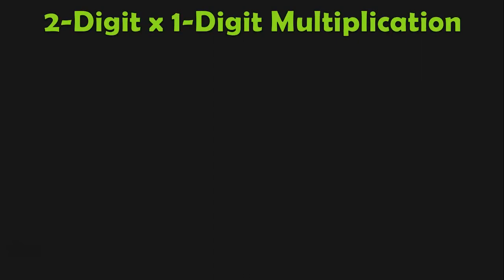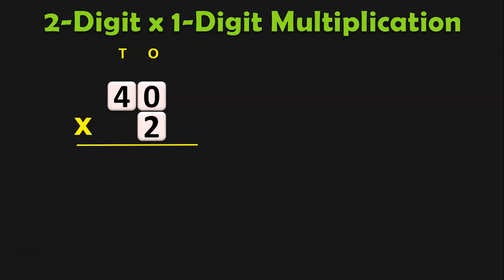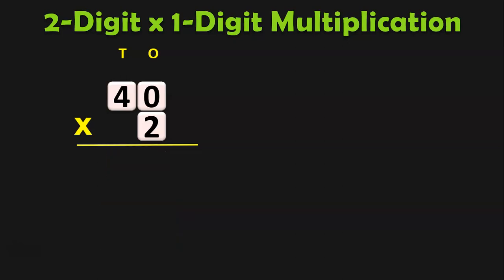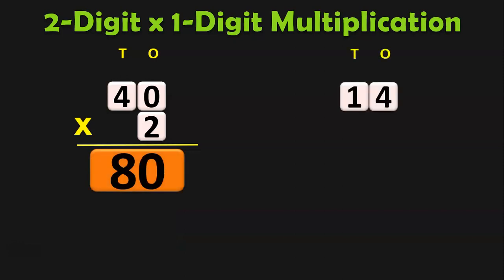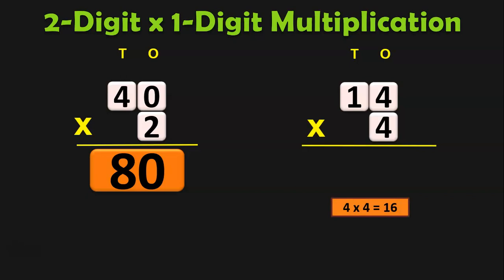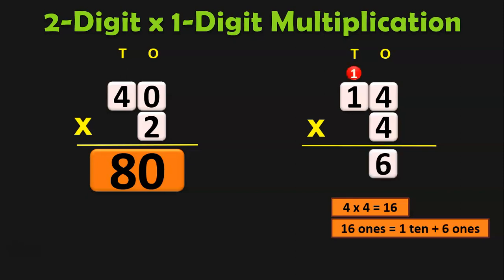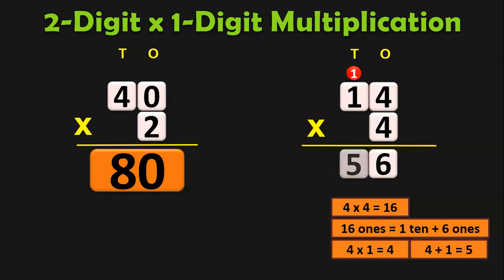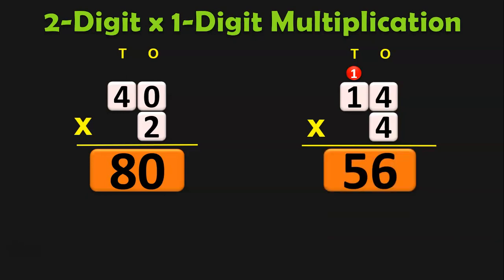40 into 2: write the place values so that you write the number 2 in the ones place correctly. 2 into 0 is 0, 2 into 4 is 8, so the product is 80. 14 into 4: 4 into 4 is 16. 16 ones equals 1 ten plus 6 ones, so 6 in the ones place and 1 is carried over to the tens place. 4 into 1 is 4, plus 1 is 5. The product is 56. Here we saw multiplication without regrouping and multiplication with regrouping in the ones place.